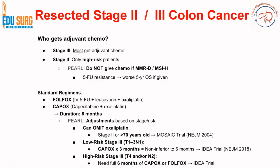The regimens used are FOLFOX and CAPOX. Adjustments in duration and drugs are made per various criteria, such as omitting oxaliplatin in stage 2 or patients over 70 years old, as per the Mosaic trial. Low-risk stage 3 is T1-T3 and N1, whereas high-risk stage 3 is T4 and/or N2. For low-risk stage 3, chemotherapy duration is 3 months versus 6 months per the IDEA trial, whereas high-risk patients receive a full 6 months of CAPOX or FOLFOX.